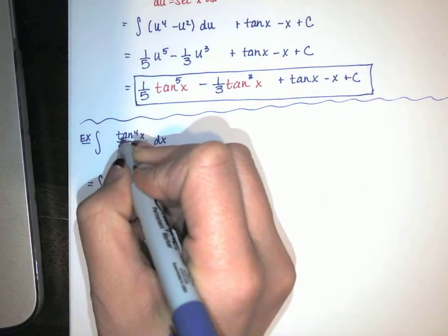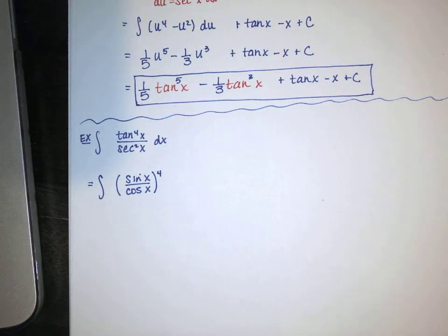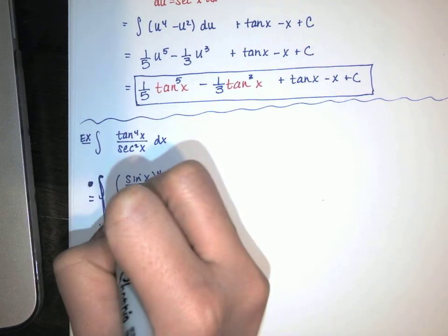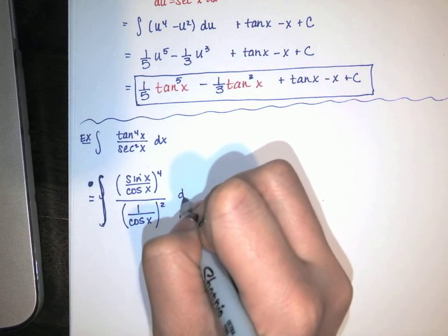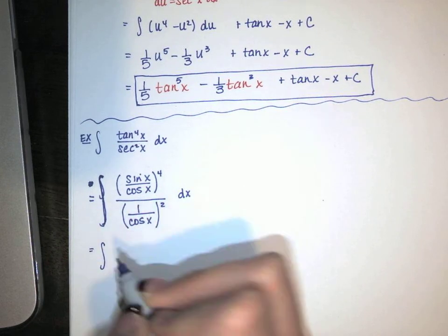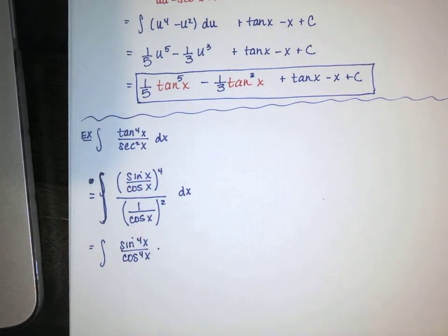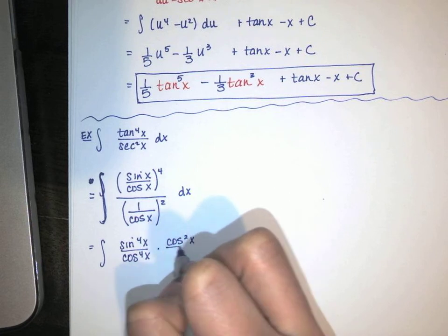Remember that tangent is sine over cosine, so this is sine over cosine. Both of them need x's. They both need angles raised to the fourth, and then we're dividing by secant squared. Now if you want, you can write secant as 1 over cosine. Actually, I'm going to do that here. It's overkill. You might be able to skip this step. And so I've got a secant squared, so it's 1 over cosine squared.